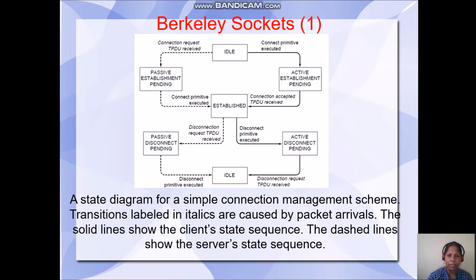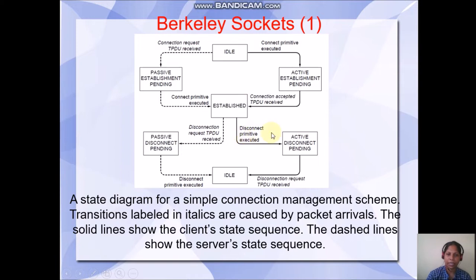Here we can see the states through which the client and server will undergo during connection establishment. There are two sets of lines shown. On the left side we can see dotted lines — this dotted line shows the server state sequence. On the right side we can see solid lines, which show the client state sequence.